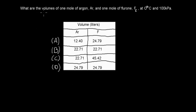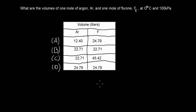Next question: what are the volumes of one mole of argon and one mole of fluorine at 0°C and 100 kPa? A, 12.4 and 24.79 L. B, 22.71 and 22.71 L. C, 22.71 and 45.45 L. D, 24.79 and 24.79 L.